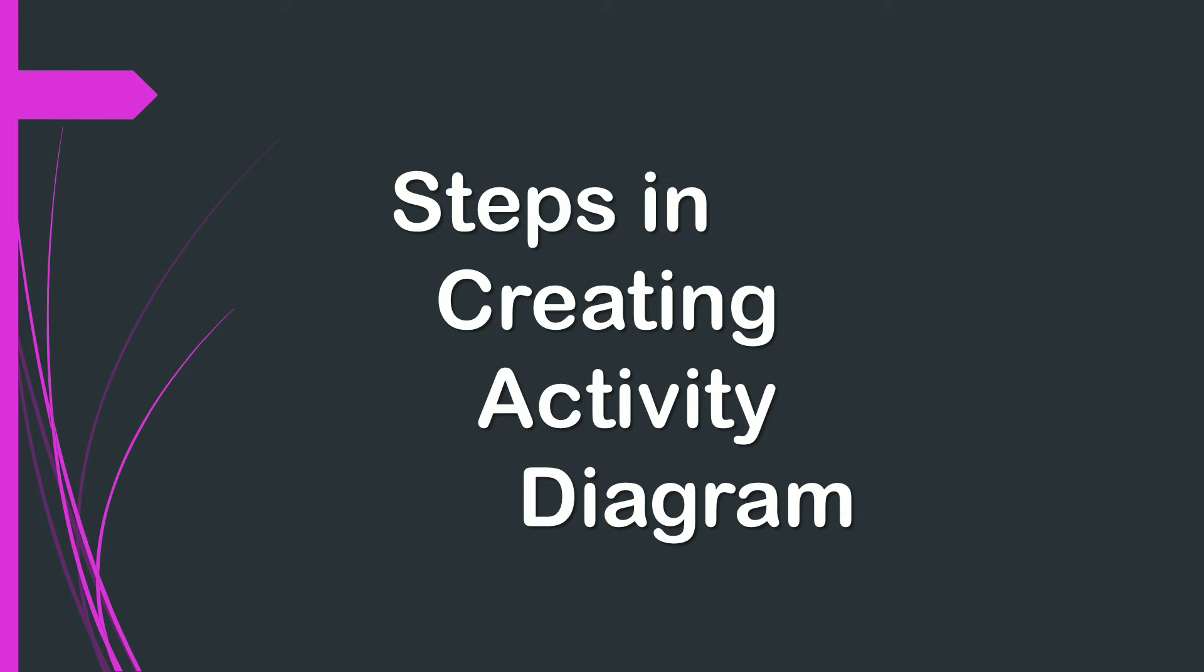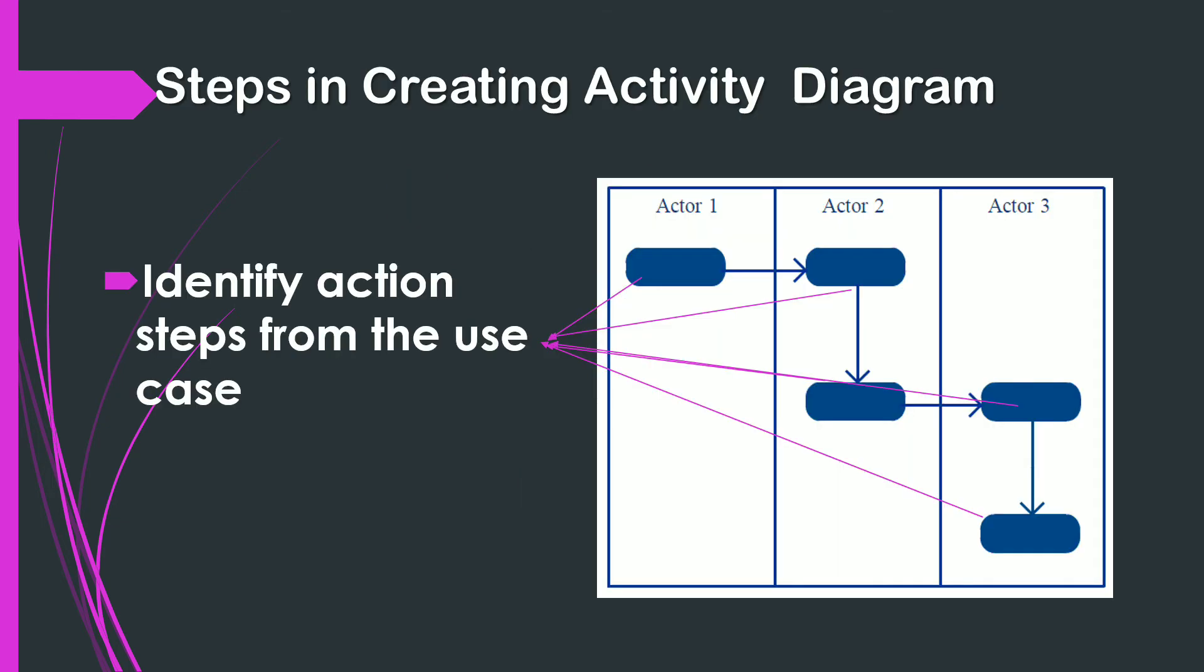There are steps in creating activity diagram. The first step is identify the action steps from the use case. In this step, you need to identify the various activities and actions your business process or system is made up of.